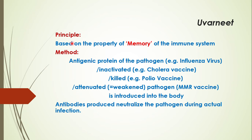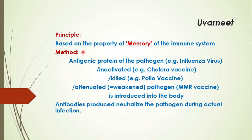What is the principle behind vaccination? It is based on the property of memory — the memory of the immune system present in man. Man has an immune system, and that immune system has a very unique quality called memory: the ability to remember any unknown protein that enters the body. This is the basic principle behind vaccination.